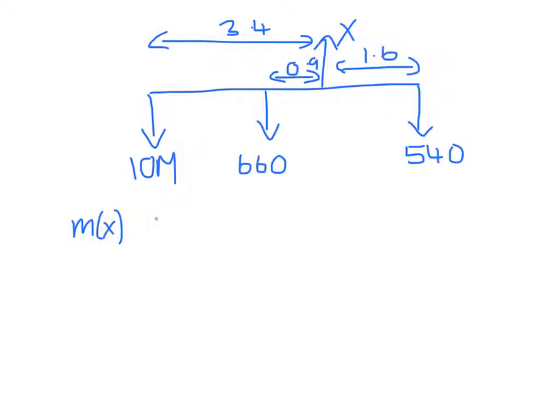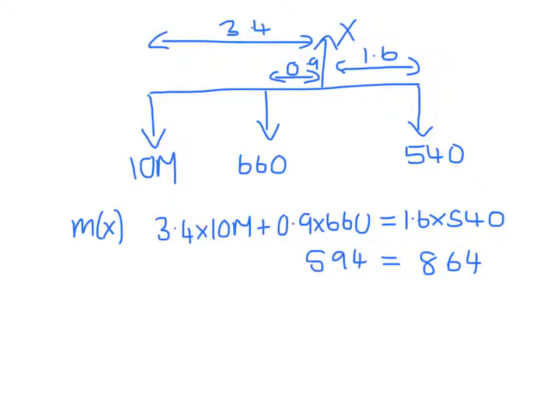I have 3.4 times 10m plus 0.9 times 660 will have to equal 1.6 times 540, which is 864. So 34.9 times 660 is 594 and we have 34m. So 34m will be 864 minus 594 is 270, and M must be 7.94 kilograms.